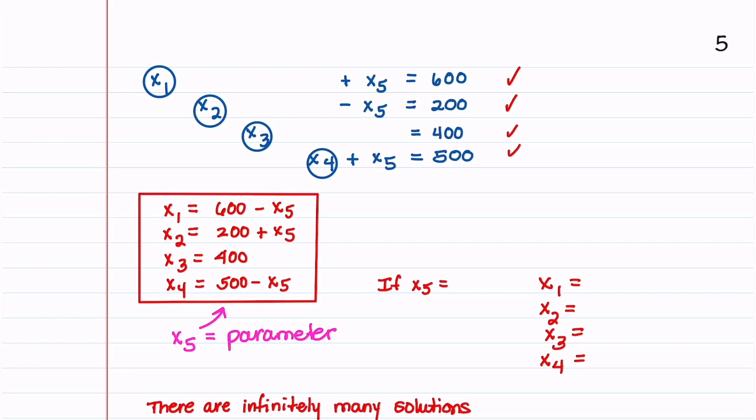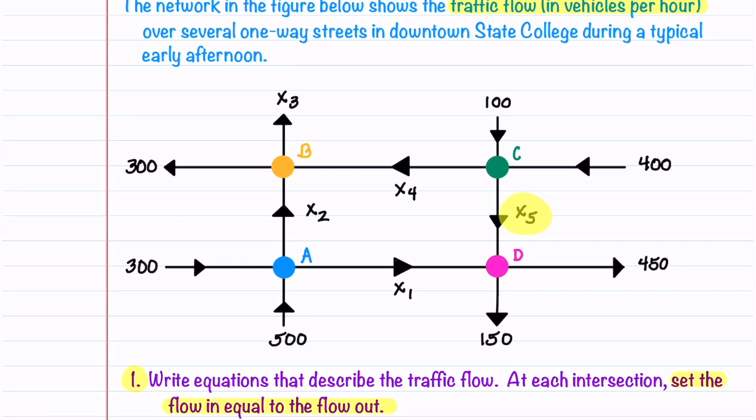To better understand what's going on with x5, let's return to our traffic flow diagram. Here's x5. x5 represents the number of vehicles per hour going into intersection D. x5 is a parameter which means that we can choose what number it should be. Let's assume that x5 equals 300.